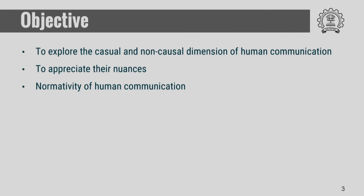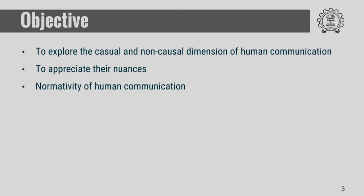There are mainly three objectives of this lecture. First, we talk about the causal and non-causal dimension of human communication. Second, what are the nuances we can appreciate out of this exercise — why communication has to be non-causal? And what is the role of the notion of addressing and understanding in this non-causal framework of communication that Ramachandra Gandhi is talking about? At the end, we aim to establish the idea that human communication is normative, and that normativity of human communication is different from the mere intentional notion of communication.